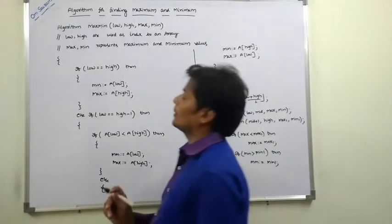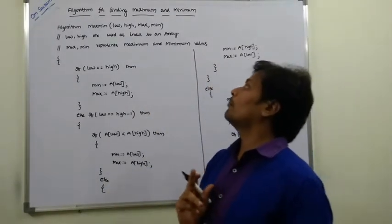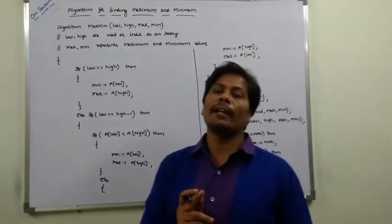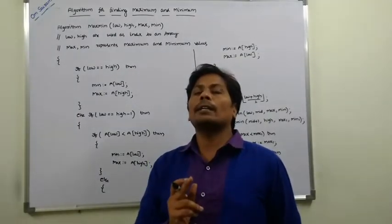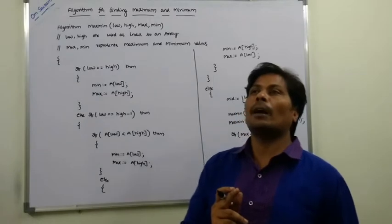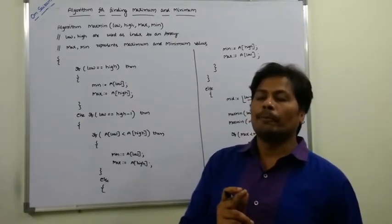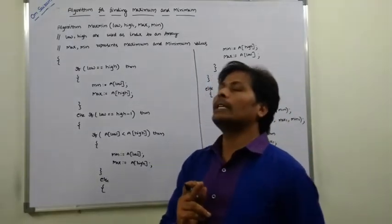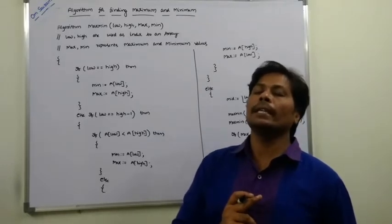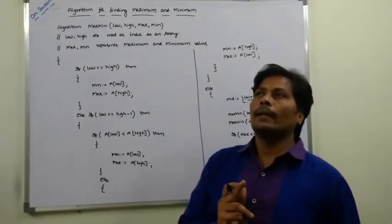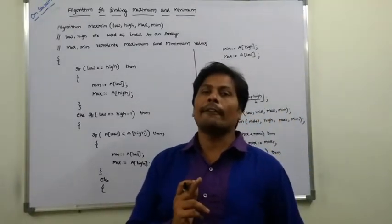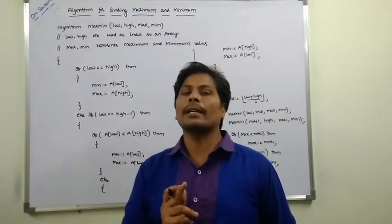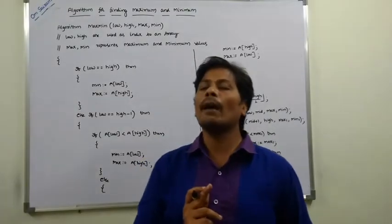This is the algorithm used for finding maximum and minimum among n given numbers using the divide and conquer technique. Divide and conquer is one of the applications of finding maximum and minimum. In this technique, there are mainly two phases. The first phase is the divide phase, where we divide the given list into two sublists.